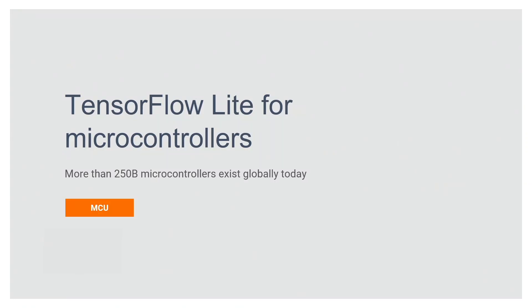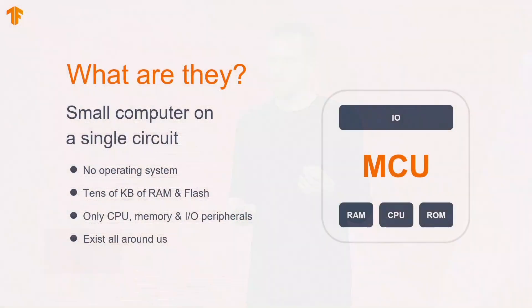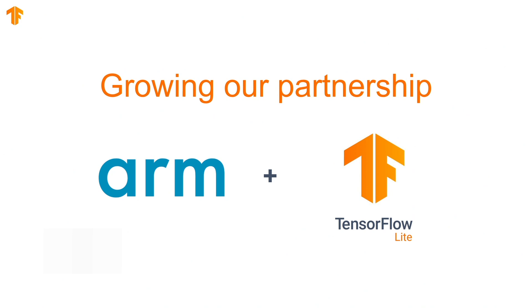I want to talk now about our efforts in enabling ML not just on billions of phones, but on the hundreds of billions of embedded devices and microcontrollers used in production globally. TensorFlow Lite for microcontrollers is that effort — it uses the same model format, the same conversion pipeline, and largely the same kernel library as TensorFlow Lite. These are small, low-power, all-in-one computers that power everyday devices from microwaves and smoke detectors to sensors and toys, costing as little as $0.10 each. ARM has adopted TensorFlow as their official solution for AI on ARM microcontrollers, and together we've made optimizations that significantly improve performance on this embedded hardware.